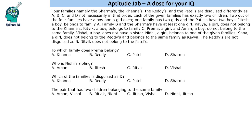It says that there are four families: Sharmas, Kannas, Redis and Patels. They are disguised by four different letters A, B, C, D. All of them have two children. Two of these families have a boy and a girl, one family has two girls, and Patels have two boys. Based on this information, we have to map the family to their code and find the children that they have.